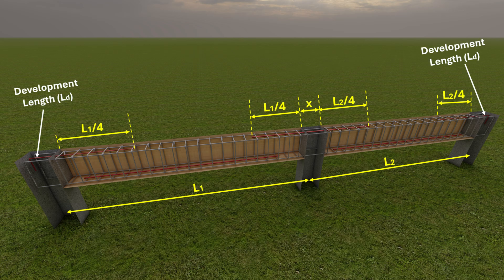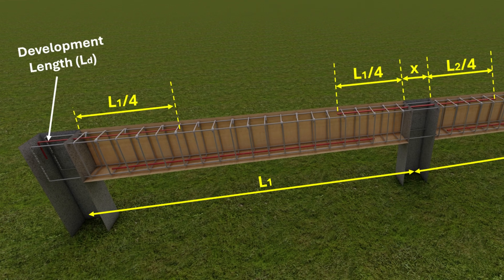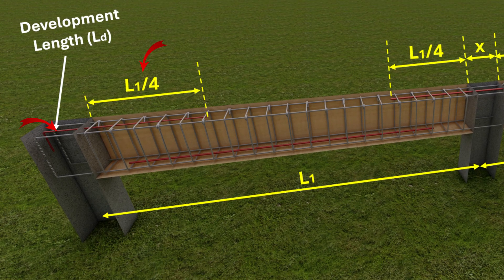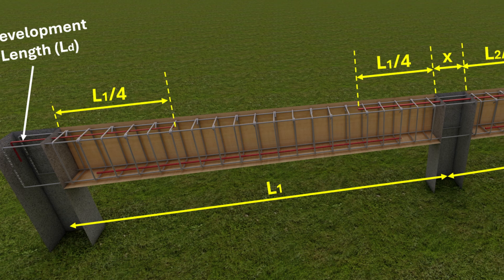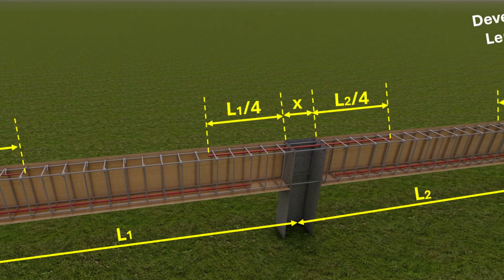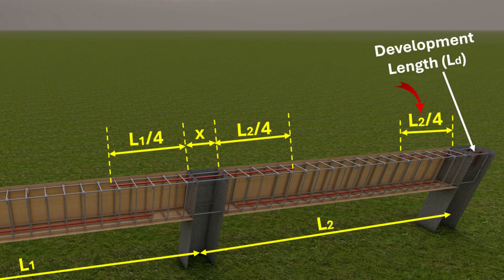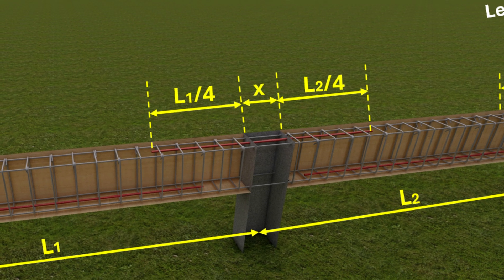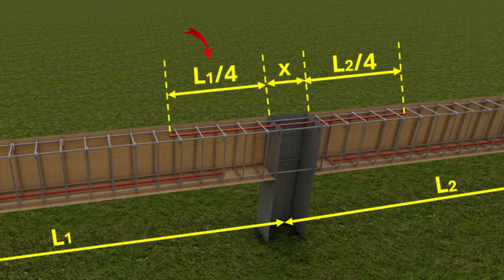For illustration, let's take the case of a 2-span continuous beam. Let L1 be the effective span 1, L2 be the effective span 2, and the thickness of intermediate support be equal to X. The length of top extra bars at the left-end support will be L1/4 plus development length. Similarly, the length of top extra bars at the right-end support will be L2/4 plus development length. The length of top extra bar at the intermediate support will be equal to L1/4 plus L2/4 plus X.